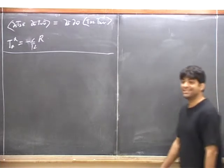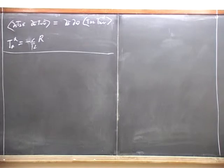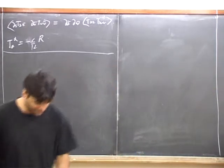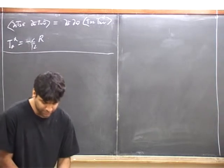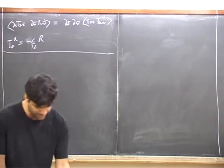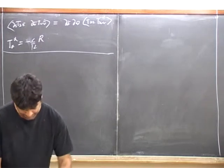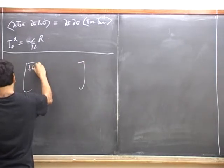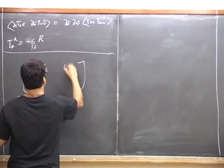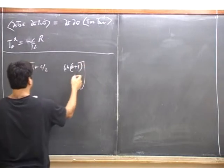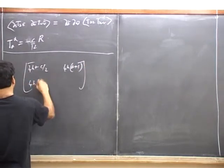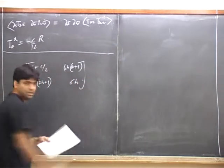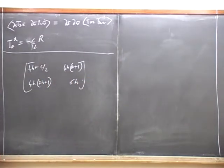That is sufficient to tell you, because there will always be a vacuum and this has to be greater than zero, so C has to be positive. Just before I gave you the answer, when I did the calculation for the most general thing, I got the following. The most general matrix I got was: 4H plus C by 2, 4H into H, 2H plus 1, 2H plus 1, 2H plus 1. That's the matrix of inner products.